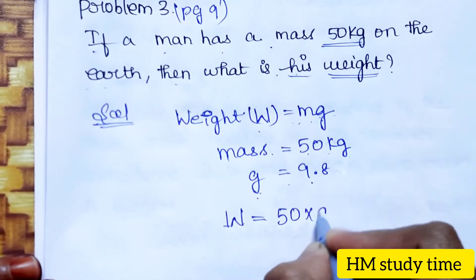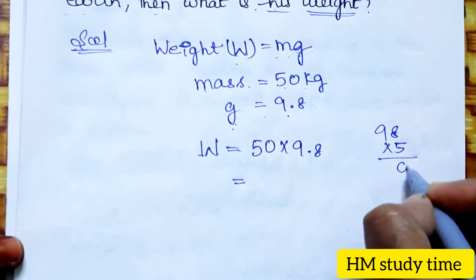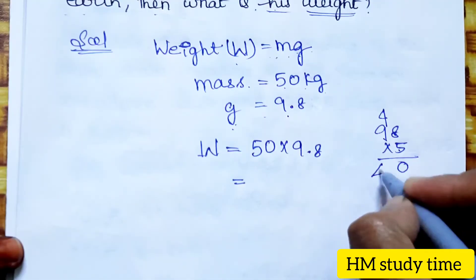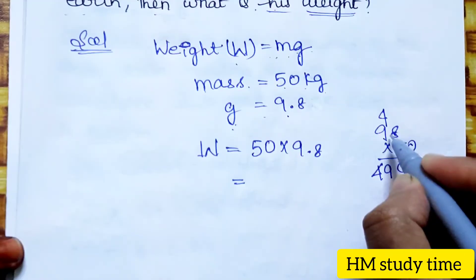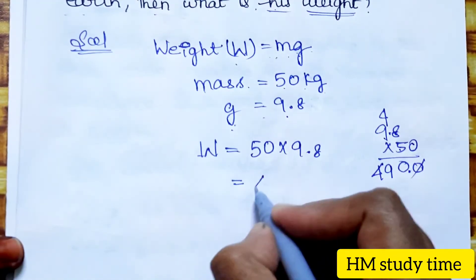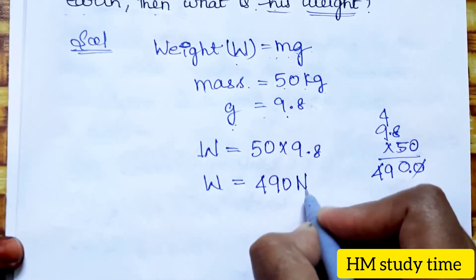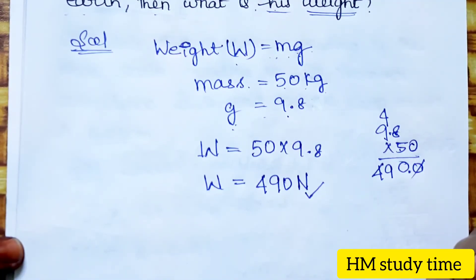Weight of the man equals 50 into 9.8, which gives 490. The unit is Newton. So the weight of the man is 490 N. If you have any doubts, please mention them in the comment section. Thank you so much for watching.